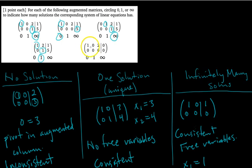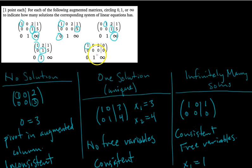The last matrix has only one pivot. It's consistent because the bottom row gives zero equals zero. There's no pivot in the augmented column, but there is a free variable. Consistent with a free variable means infinitely many solutions.